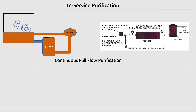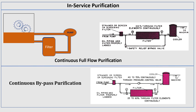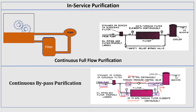Next is continuous bypass purification. We pump some amount of lubricating oil through a filter at a time. Only a portion of the lubricating oil is filtered — partial filtration happens — but the machine continues to run while we filter over time. This is in-service purification.